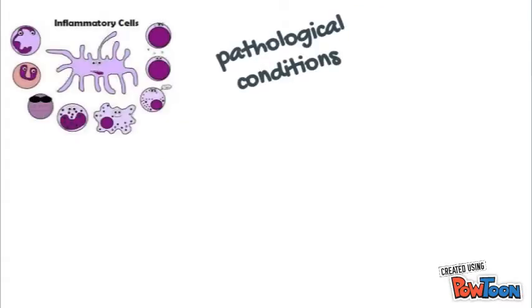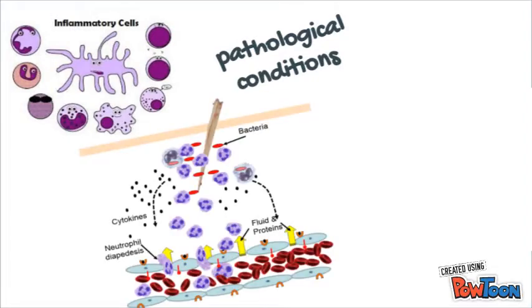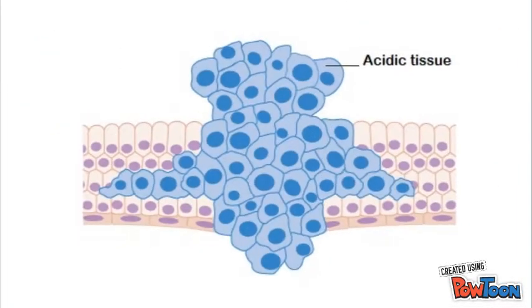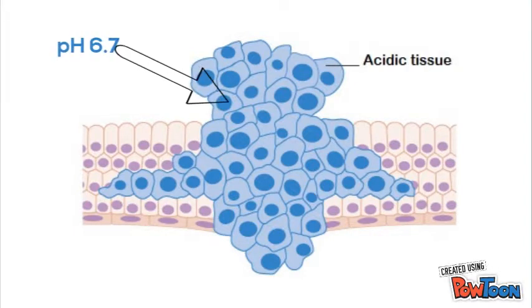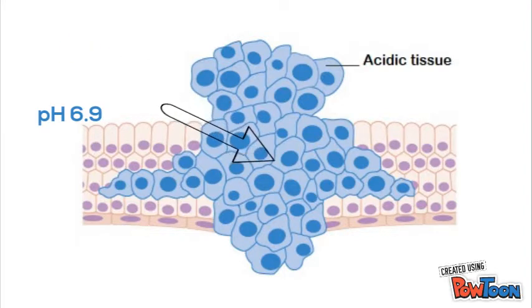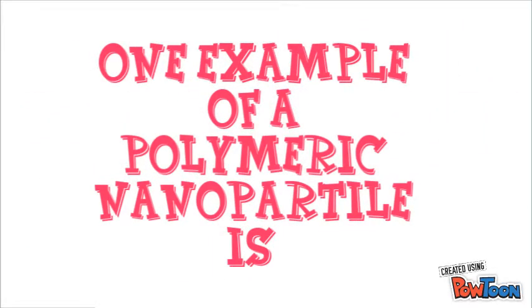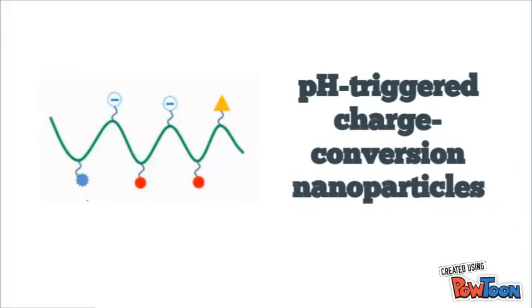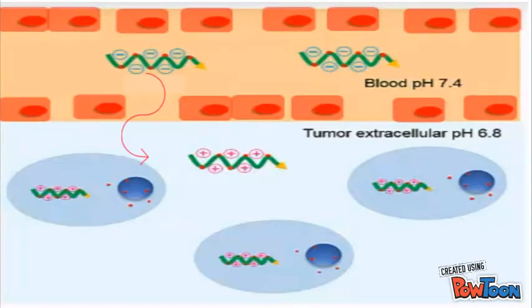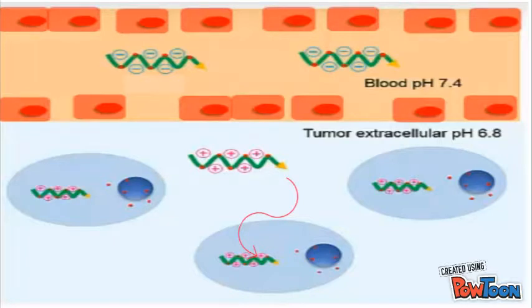While pathological conditions, including inflammation, infection, and cancer, are characterized by the presence of acidic tissue. For example, the pH value typically ranges from 6.7 to 6.9 in tumor tissue at a certain distance. One example of a polymeric nanoparticle is the pH-triggered charge-conversion nanoparticles, used to enhance cellular uptake of the drug based on the change from negatively charged to positively charged in the slightly acidic extracellular environment of the tumor.